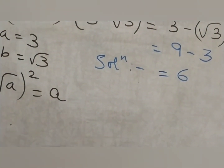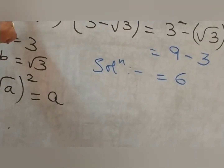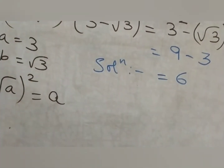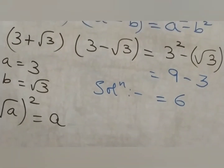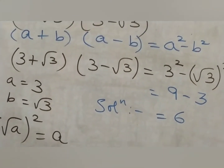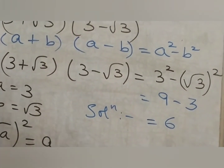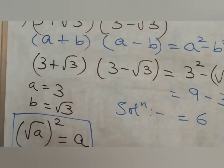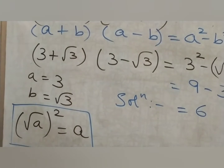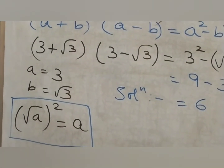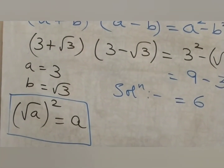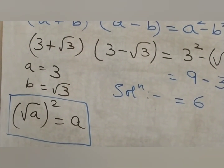It is very simple children. Remember the identity: (a + b)(a − b) = a² − b². And remember this very important rule: (√a)² = a. Let's move on.